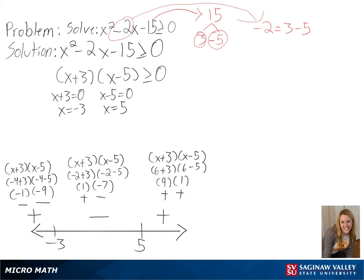For our solution, we need to find what is greater than or equal to 0. So our regions will include negative 3 and 5, and it will be our positive region. So we get negative infinity to negative 3, and then 5 to infinity as our final answer.